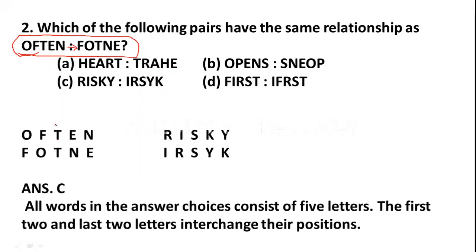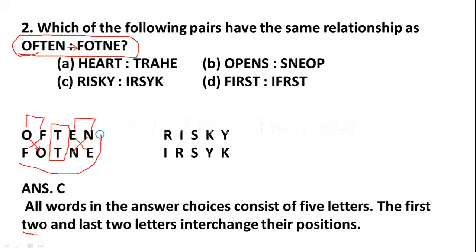In OFTEN and FOTNE, the first two letters O and F are interchanged — in place of O, F is written; in place of F, O is written. The middle letter T is kept as it is. The fourth and fifth letters E and N are interchanged — in place of E, N is written; in place of N, E is written. So the relation is: swap first two, keep middle, swap last two. We will find this relation in Option C.